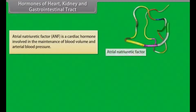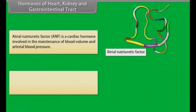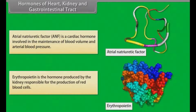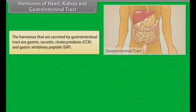Atrial natriuretic factor (ANF) is a cardiac hormone involved in the maintenance of blood volume and atrial blood pressure. Erythropoietin is the hormone produced by the kidney and is responsible for the production of red blood cells.